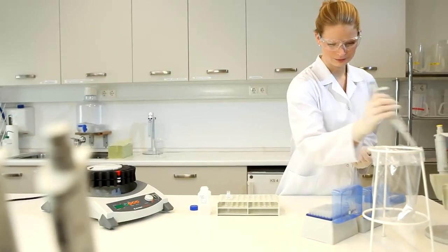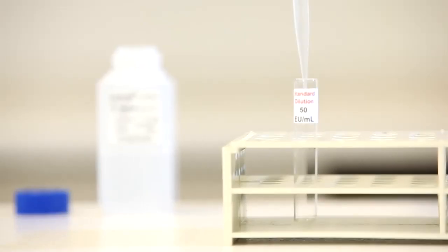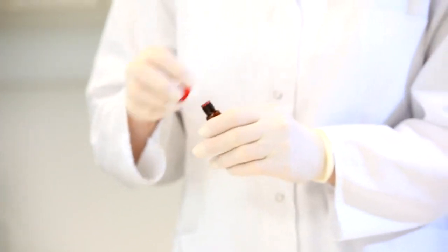For the dilution series, pipette 900 microliters of endotoxin free water into each test tube. Be sure to use endotoxin free glassware for all standard dilutions and samples. Avoid using plastics.